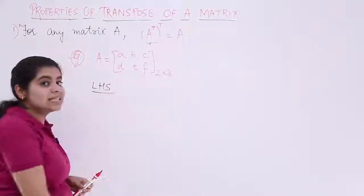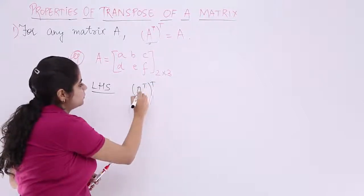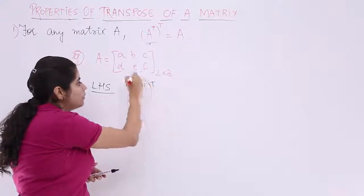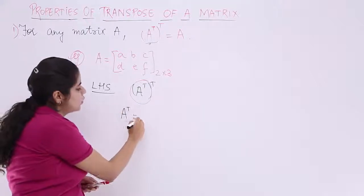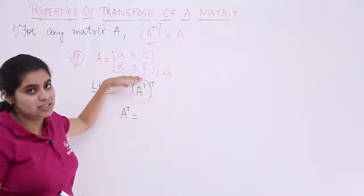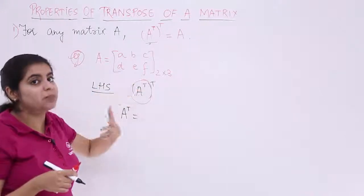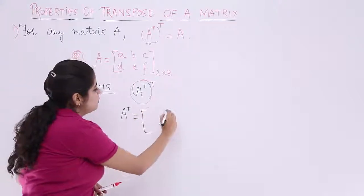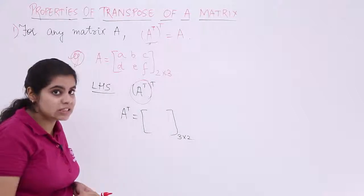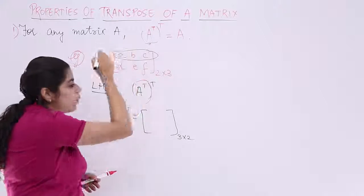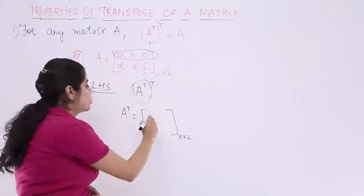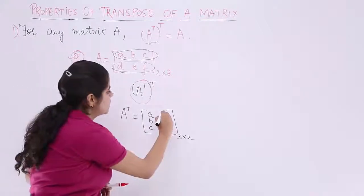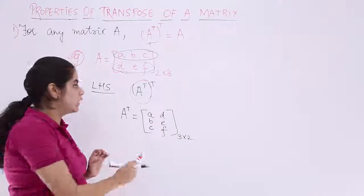Let me take LHS, which is A transpose transpose. For A transpose transpose, we need to first compute A transpose. The transpose of A — a 2×3 matrix — will be a 3×2 matrix, because you interchange rows with columns and columns with rows. So it is a 3×2 matrix with 3 rows and 2 columns. The first row [A, B, C] becomes the first column, and the second row [D, E, F] becomes the second column. This result is A transpose.